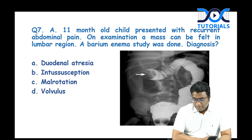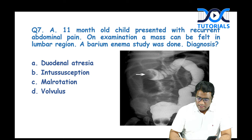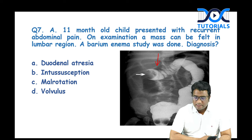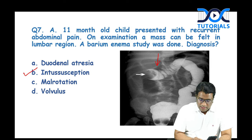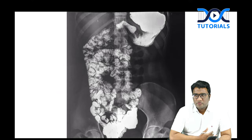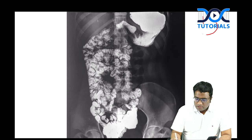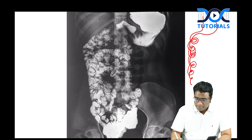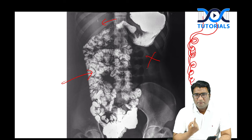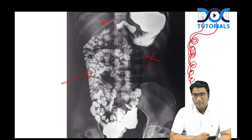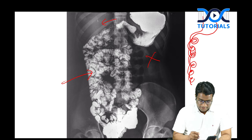Next: an 11-month-old child with recurrent abdominal pain and a lumbar mass — barium enema showed the classic claw sign, which is a feature of intussusception. Also understand malrotation: on barium meal follow-through, you see corkscrew duodenum and all jejunal/ileal loops lying to the right of the vertebra — that is the malrotation pattern.